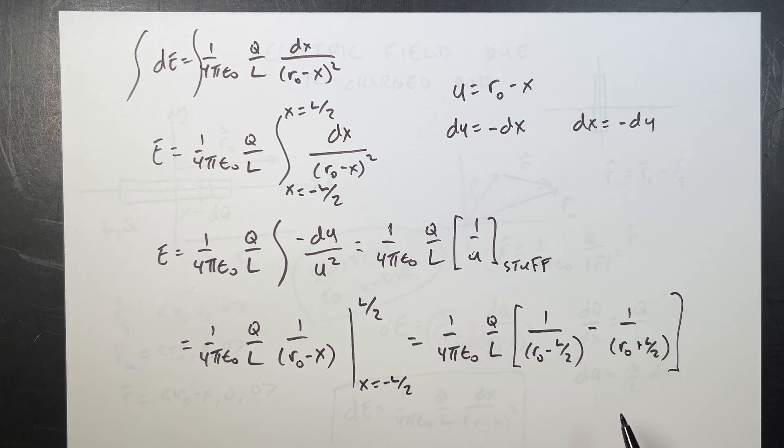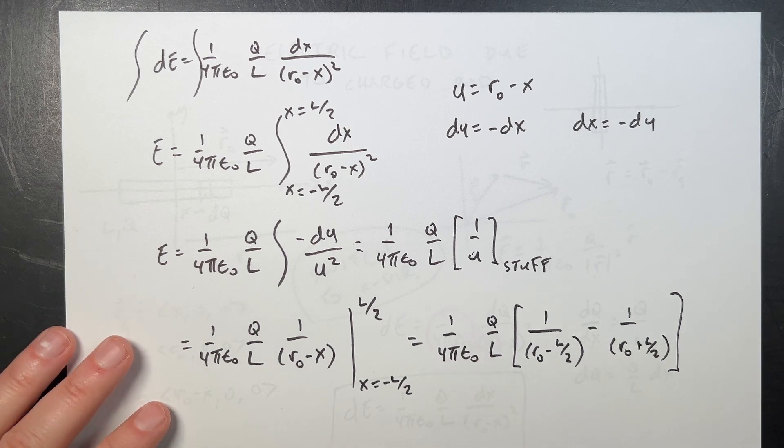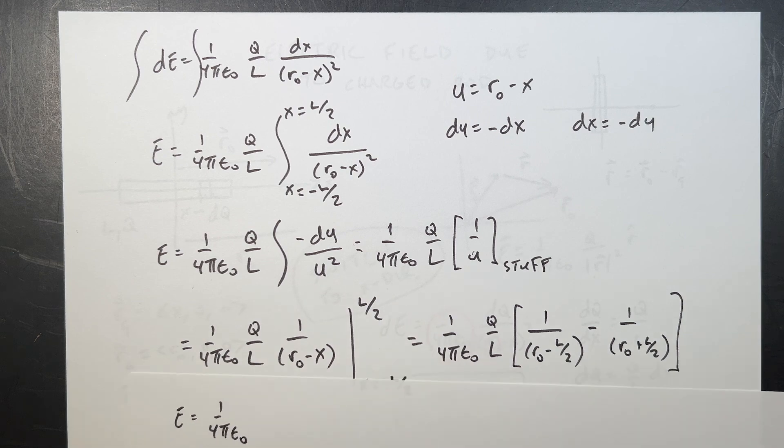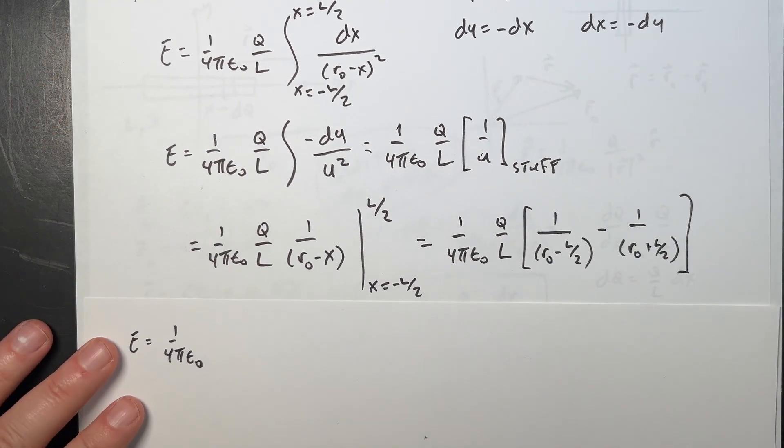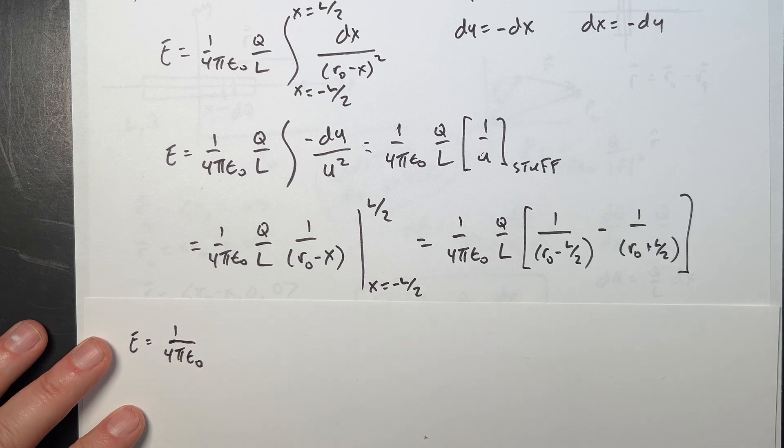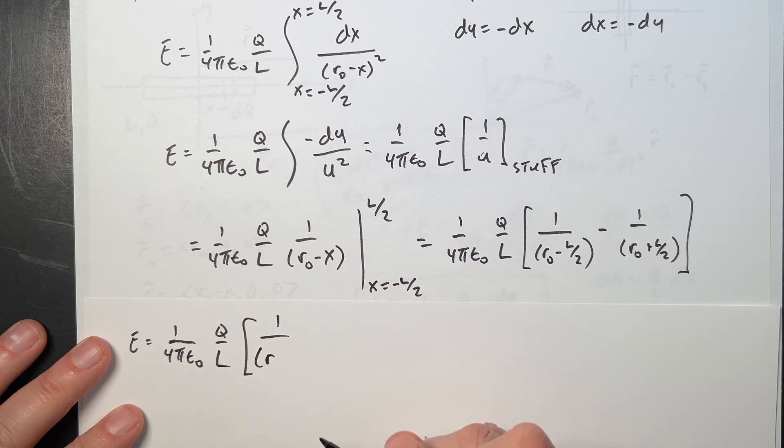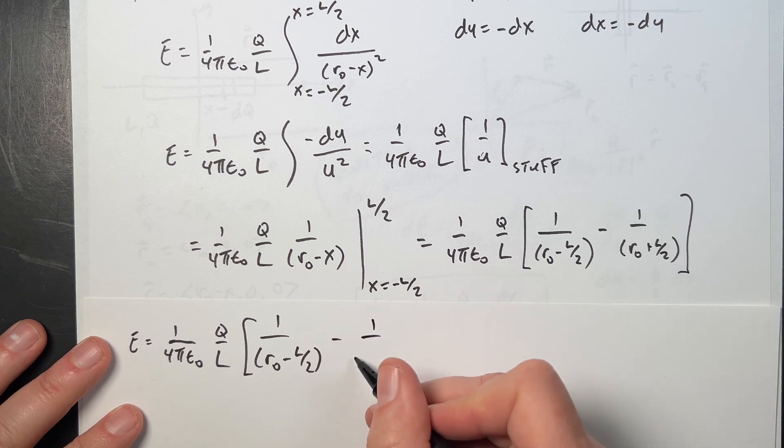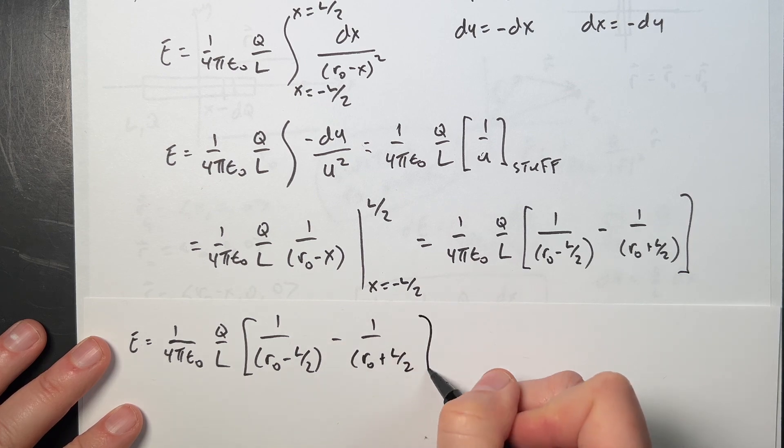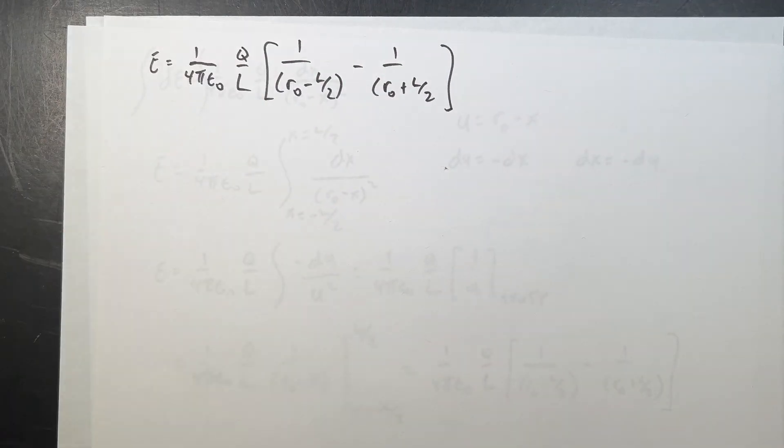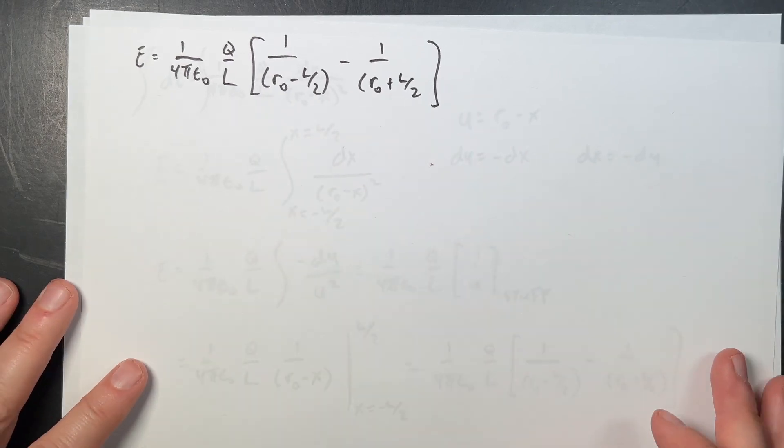But I don't want to be done. I want to keep going on forever. So let's simplify this. Let me rewrite that right here. E equals 1 over 4π epsilon naught q over L, 1 over r0 minus L over 2 minus 1 over r0 plus L over 2. Let's get a common denominator. And again, you could just plug in your values right here. This is technically done. But I just want to go further.